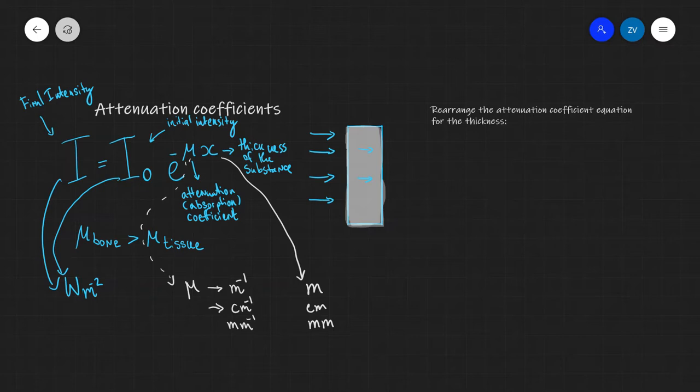Now quite often in problems in physics, we need to rearrange this equation for the thickness, or maybe we need to find the absorption coefficient in a question. So let's just practice rearranging this. The equation, as we said, is I = I₀e^(-μx). Now our first step in rearranging for the thickness would be to simply isolate the exponential. So all this means is that we're going to put the exponential on one side of the equation. Well this means that I/I₀ will be equal to e^(-μx).